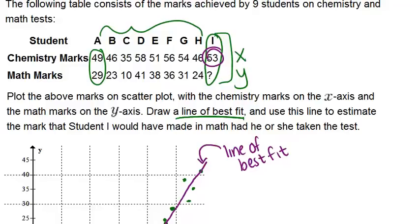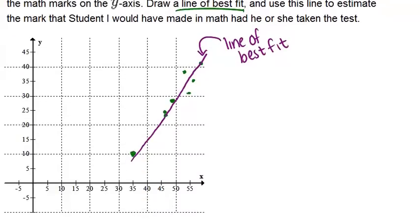So if the 53 was in chemistry, and that is our x-axis, and math is our y-axis, we can try to find 53, which is about right here.